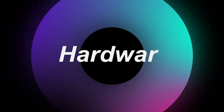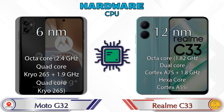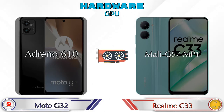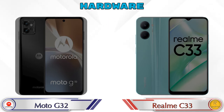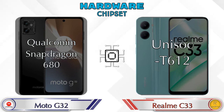First we talk about the most important part of the phone — hardware. Starting with the CPU and GPU: the G32 has an Adreno 610 and the Realme C33 has a Mali-G57. For the chipset, the G32 has a Qualcomm Snapdragon 680 and the Realme C33 has a Unisoc T612.